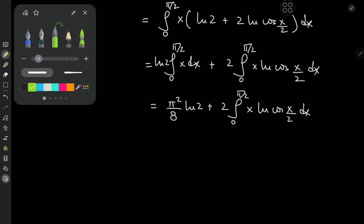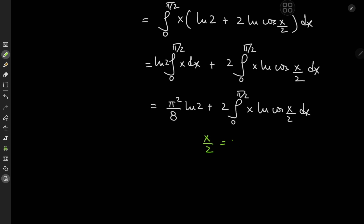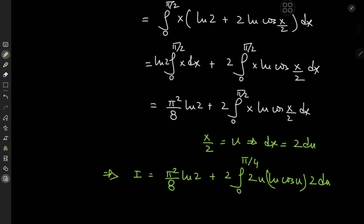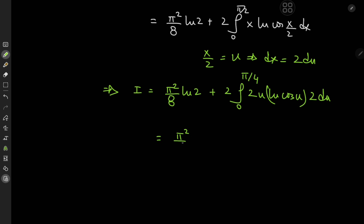A substitution here is a no-brainer. We let x/2 = u, which implies dx = 2 du. This gives I = π²/8·log 2 + 2 times the integral from 0 to π/4 of 2u times log(cos u) times 2 du. Multiplying out all the 2s gives π²/8·log 2 + 8 times the integral from 0 to π/4 of u·log(cos u) du.